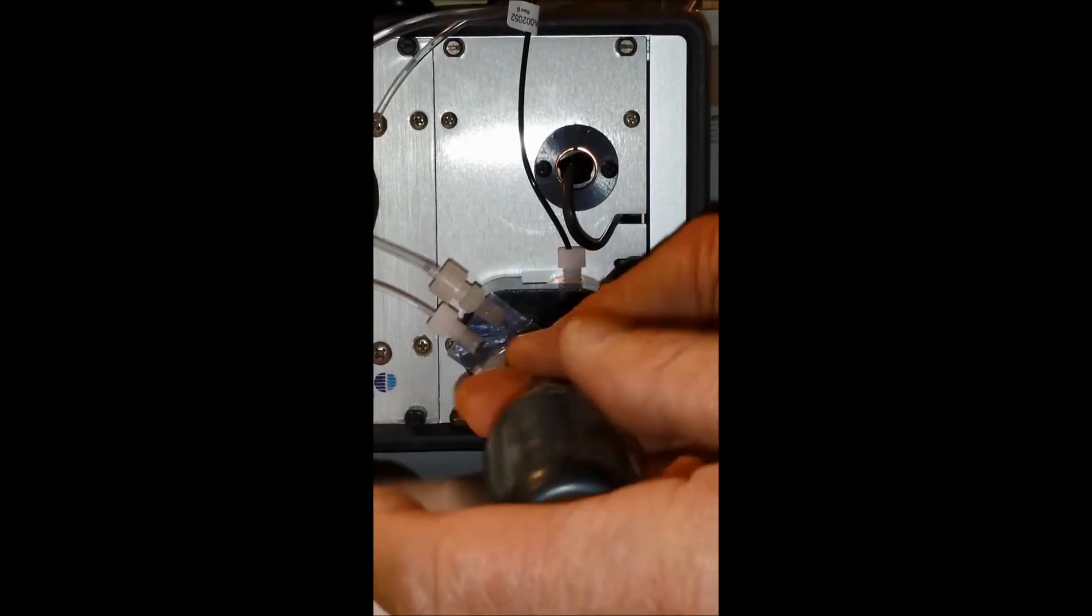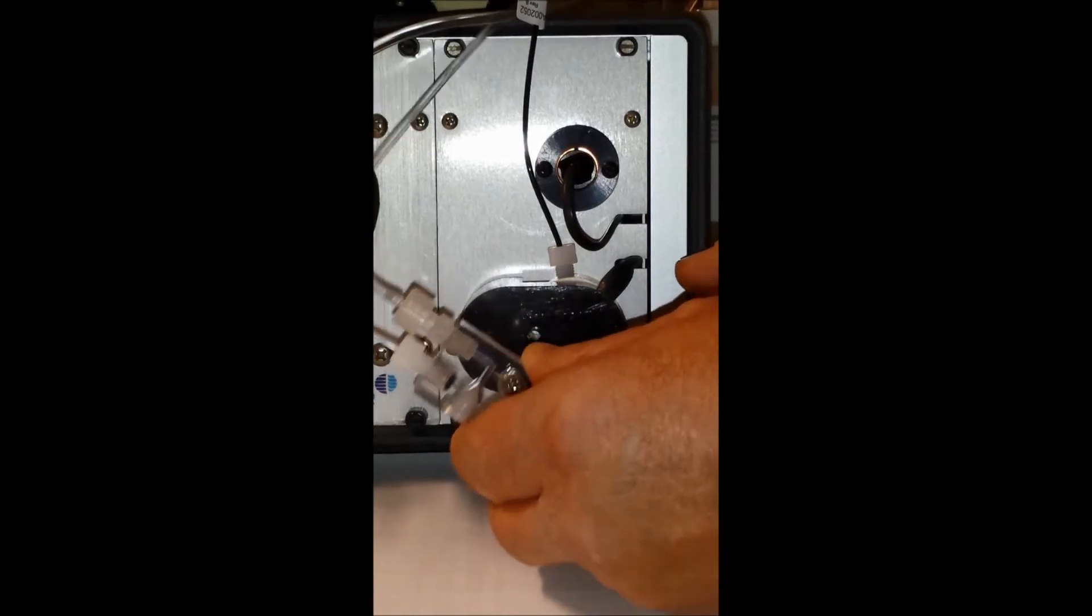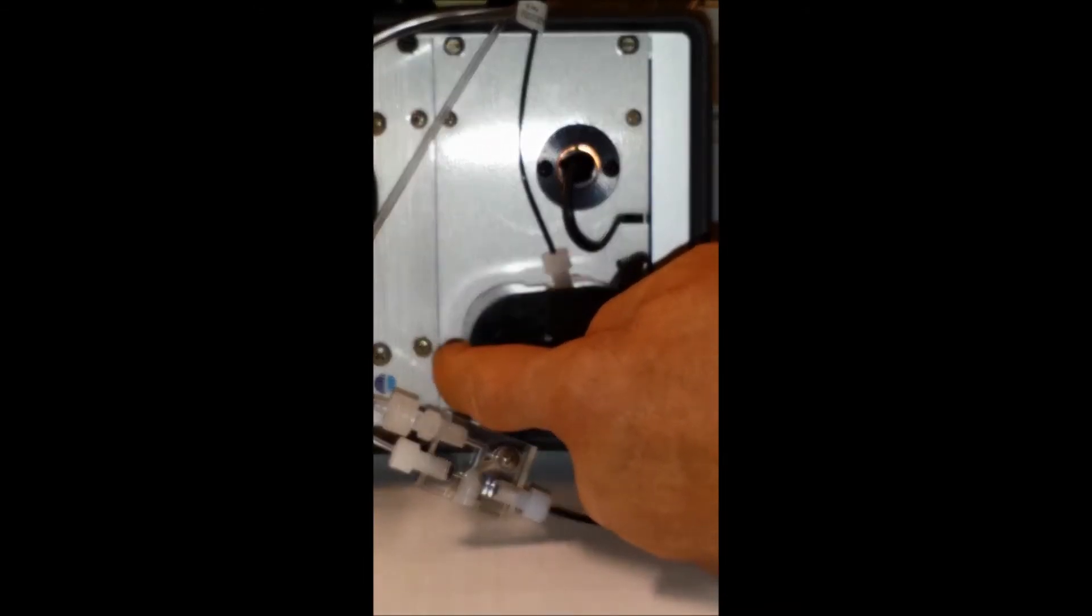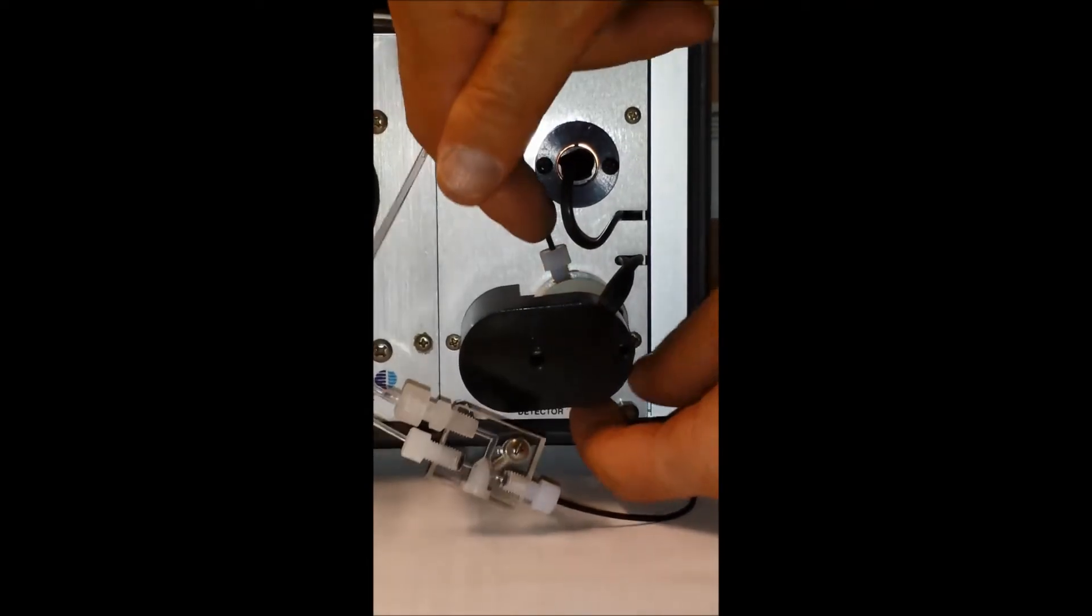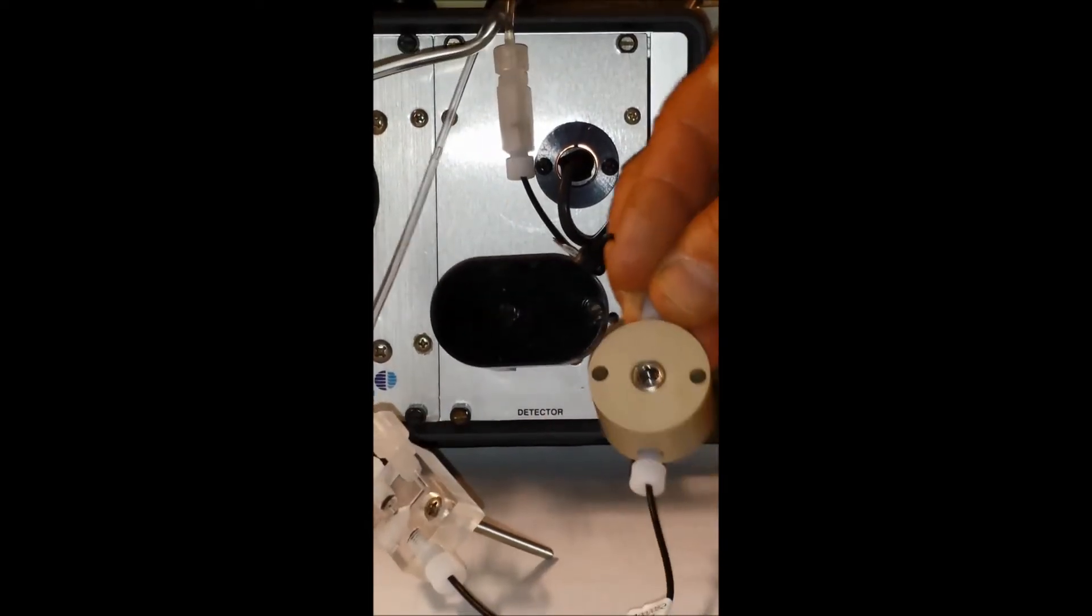You want to carefully remove the two screws and then gently pull everything away, not damaging the wires or the fiber optic cable or any tubing. Then slide the flow cell out and with a white background, look through the window to see if you see any obstruction.